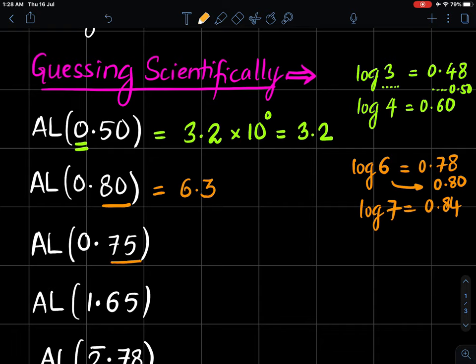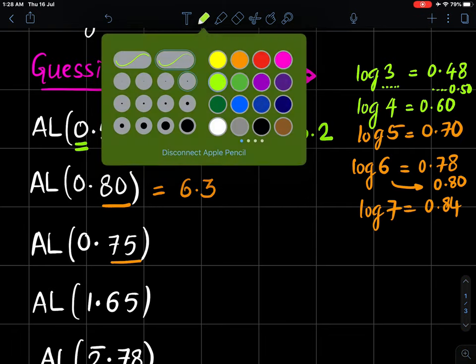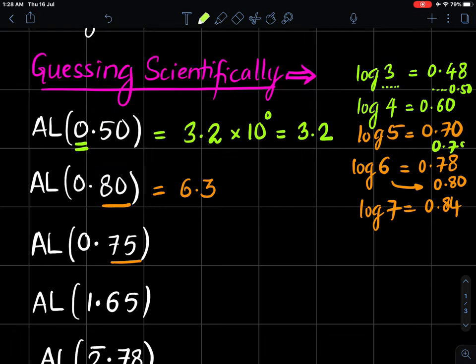Similarly, log of 0.75. We are aware log of 5 is 0.70, but we are looking at 0.75. If you remember, this is 10's power characteristic. 0.75 is between the two, but slightly greater than the average of 0.74. So you can guess it should be 5.6 because it should be slightly greater than 5.5.